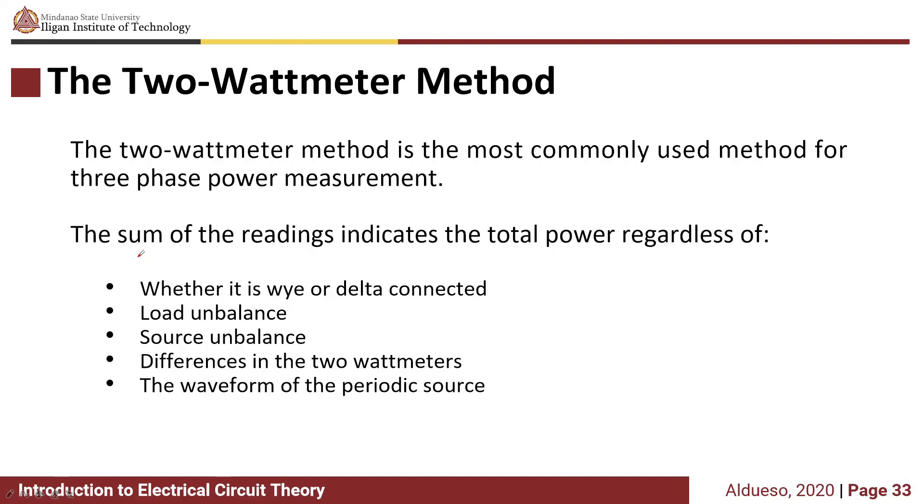The two-wattmeter method indicates the total power regardless of whether it is Y or delta connected, load unbalance, or source unbalance. It is applicable to unbalanced and balanced systems and accounts for differences in the two wattmeters and the waveform of the periodic source.